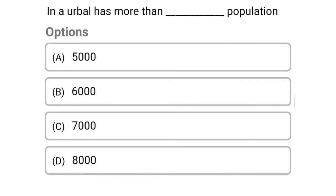Next question: in India, an urban area has more than how much population — option A, 5,000; option B, 6,000; option C, 7,000; option D, 8,000. The correct answer is option A, 5,000.